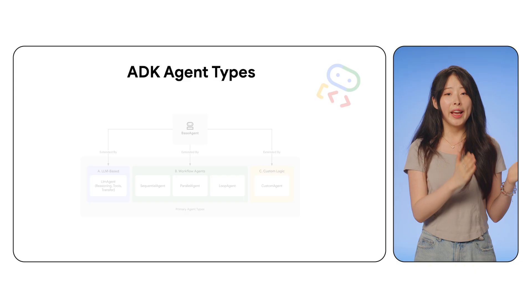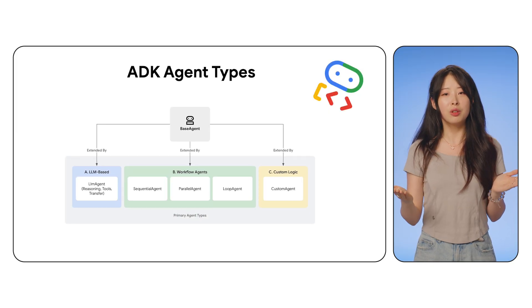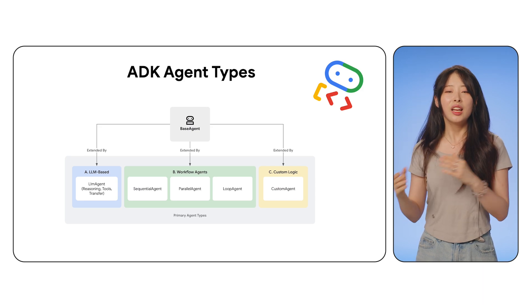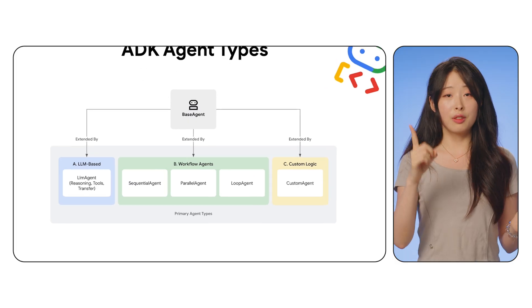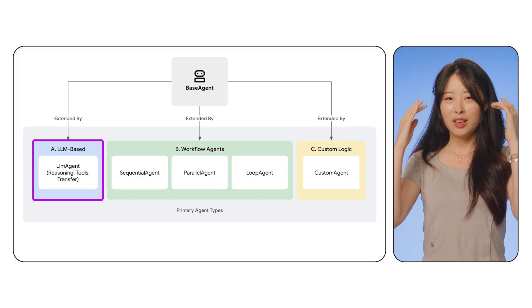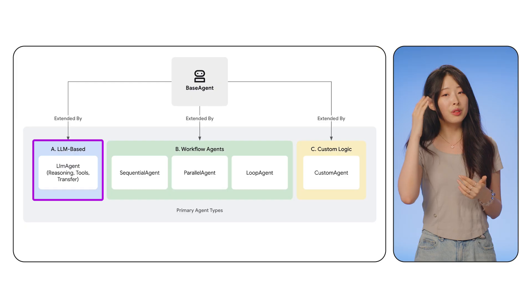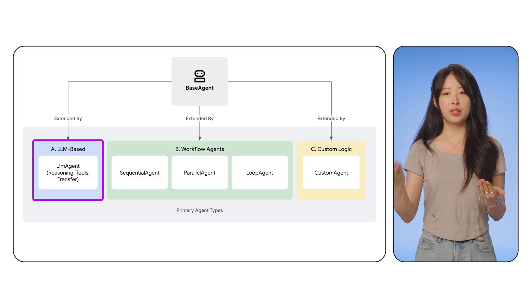The second part of today's episode is how ADK supports multi-agent systems. Google Agent Development Kit, ADK, was built with multiple agent support in mind. Instead of you just hacking things together, it gives you three main types of agents, each with specific roles. The first type is the LM agent — those are like the brain. They use large language models like Gemini to understand users' input, reason about it, and decide what tool to pick and what to do next.